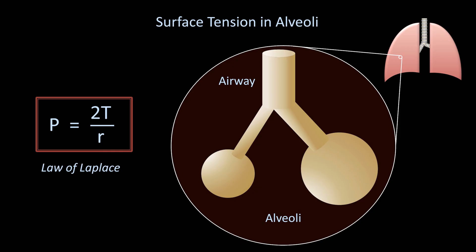So how is the law of Laplace applicable here? First, the lungs are a very moist place, and the insides of the alveoli are coated with water. Some alveoli may start off larger than others. Since the surface tension of water is independent of the size of the alveoli, based on the law of Laplace, a large radius results in a relatively low pressure, while a small radius results in a relatively high pressure.